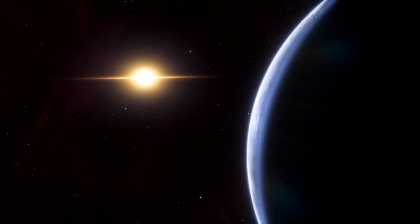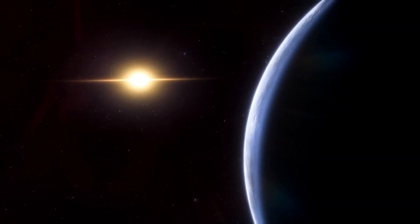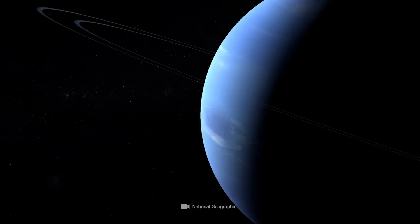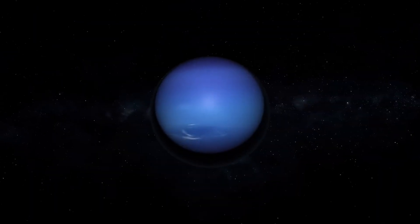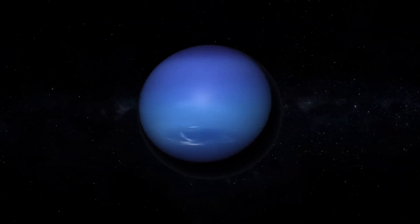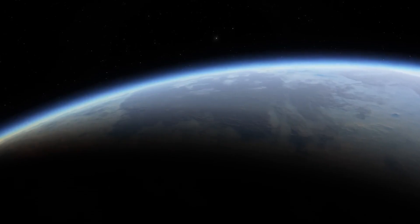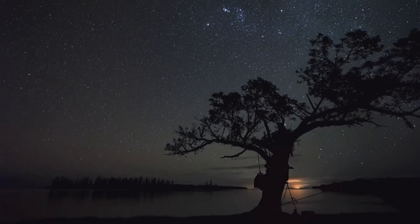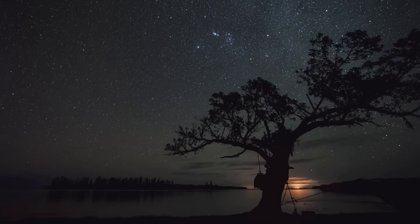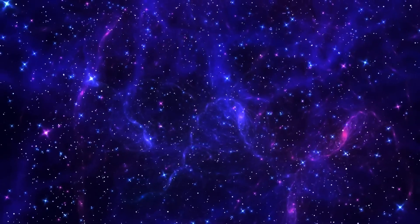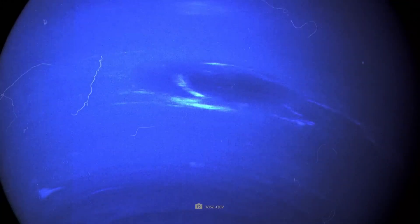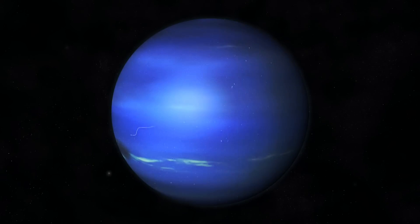Webb also photographs Saturn's moons. Who would have thought that Saturn's moons would also appear in a new light in the new images? Webb was able to capture three of Saturn's 145 moons: Dion, Enceladus, and Tethys can be seen in the image.